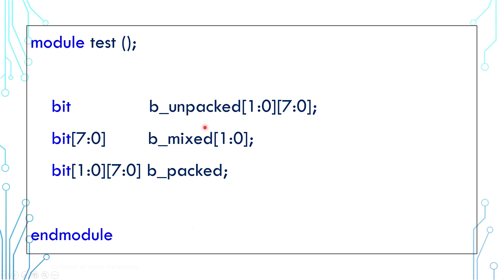We can create a multi-dimensional array as well. These 3 examples here are all 2 bytes. The first example is purely unpacked. The last one is purely packed. And the middle one is a hybrid.